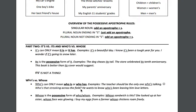For example: he wants to know who has been leaving him love letters — that works, so you'd use who's. Also keep in mind that it's and who's are examples of apostrophes used in contractions, because they are shortened versions of words. Let me know if you have questions. Thanks.